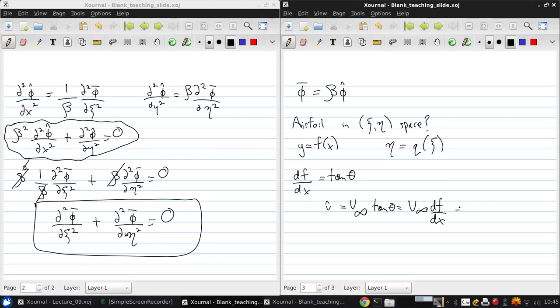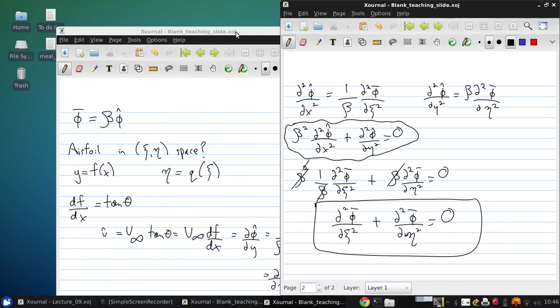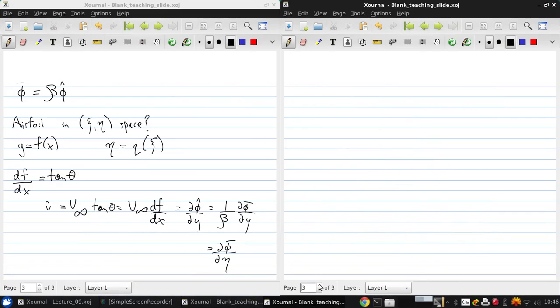And v hat, by definition, is v hat dy. So writing this in terms of our new potential, this is 1 over beta d phi bar dy. So applying the variable transform, this gives us d phi bar d eta.